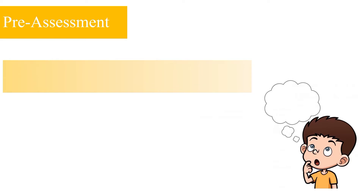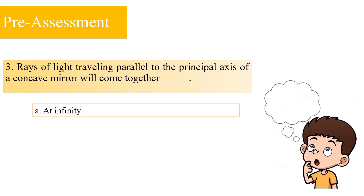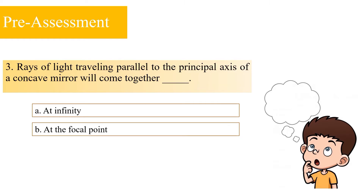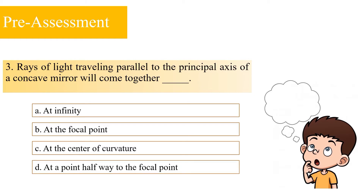Number 3: Rays of light traveling parallel to the principal axis of a concave mirror will come together — A: at infinity; B: at the focal point; C: at the center of curvature; or D: at a point halfway to the focal point. The correct answer is letter B — at the focal point.